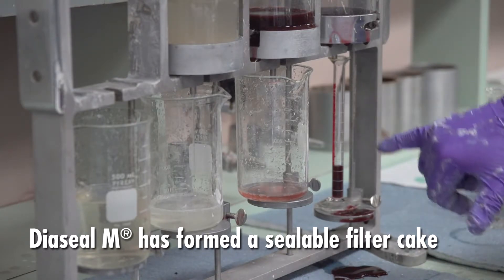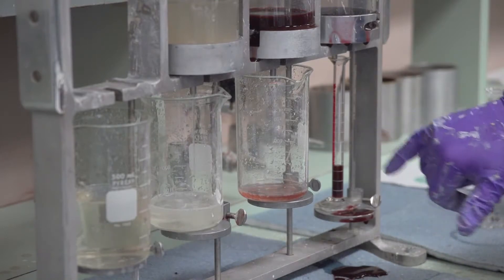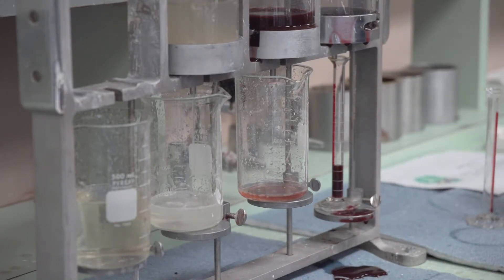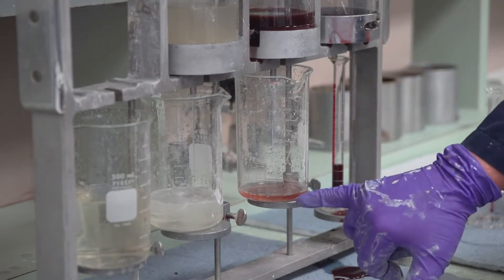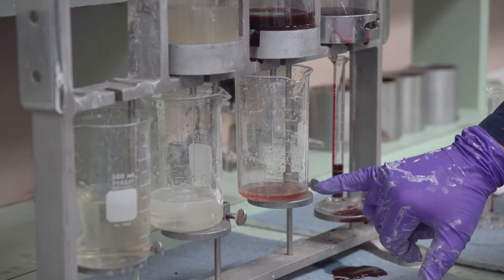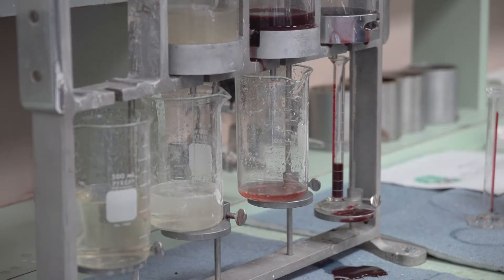You can see the mud itself, if we ran this a full 30 minutes, would be about a 10 ml fluid loss, the API fluid loss. You can see we've squeezed out a little bit more water out of that as we put pressure on the cake. If you're in a downhole situation and you're putting more hydrostatic head, the cake would pack up tighter and we would squeeze even more water out of it.